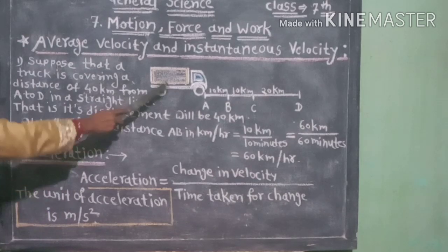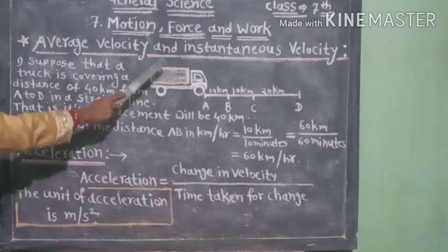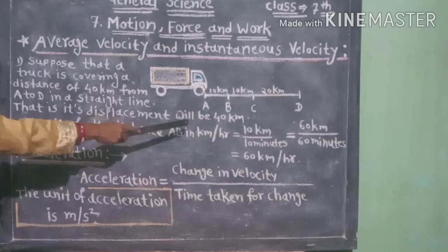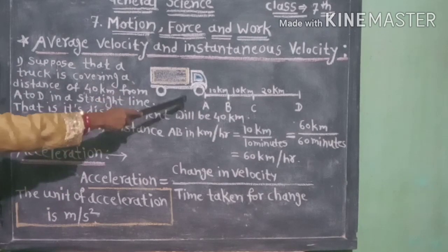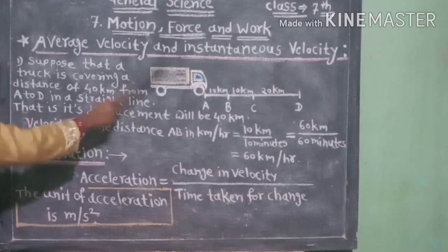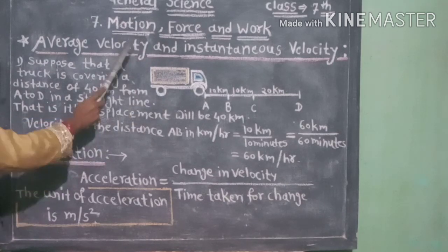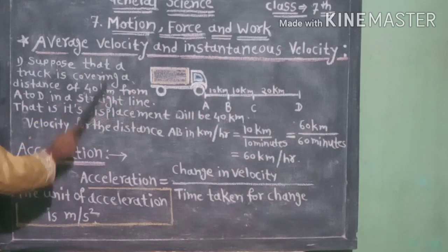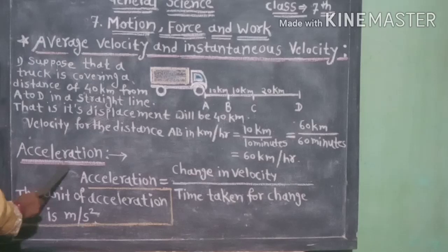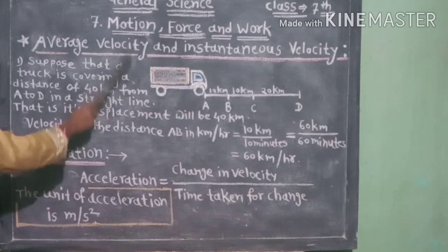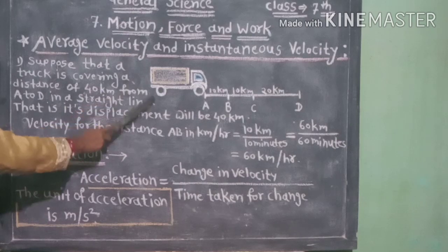In the previous examples, the truck covered distance AB at the velocity of 60 km per hour, BC at 30 km per hour, and CD at 40 km per hour. It means that the velocity for the distance CD is greater than the velocity for the distance BC. From the number of seconds required for this change in velocity to take place, the change in velocity per second can be deduced.